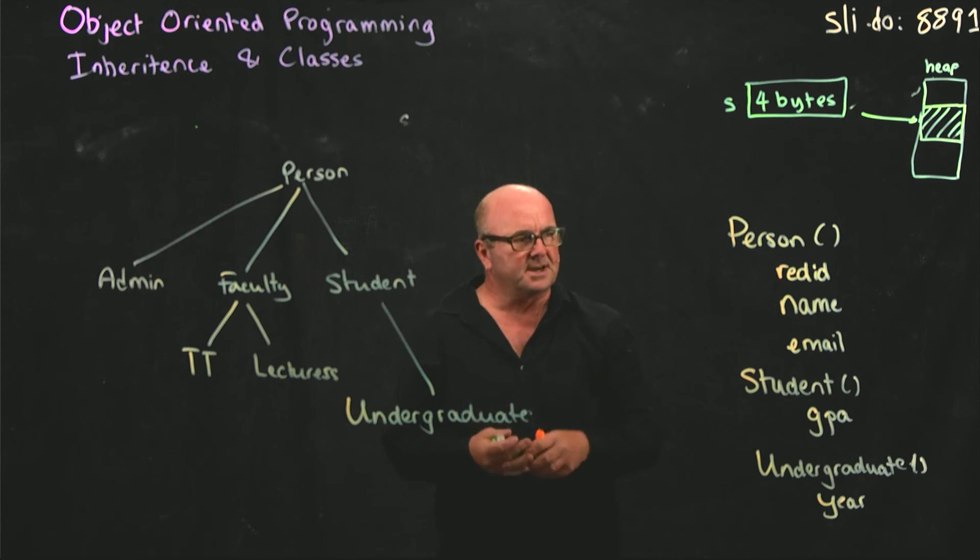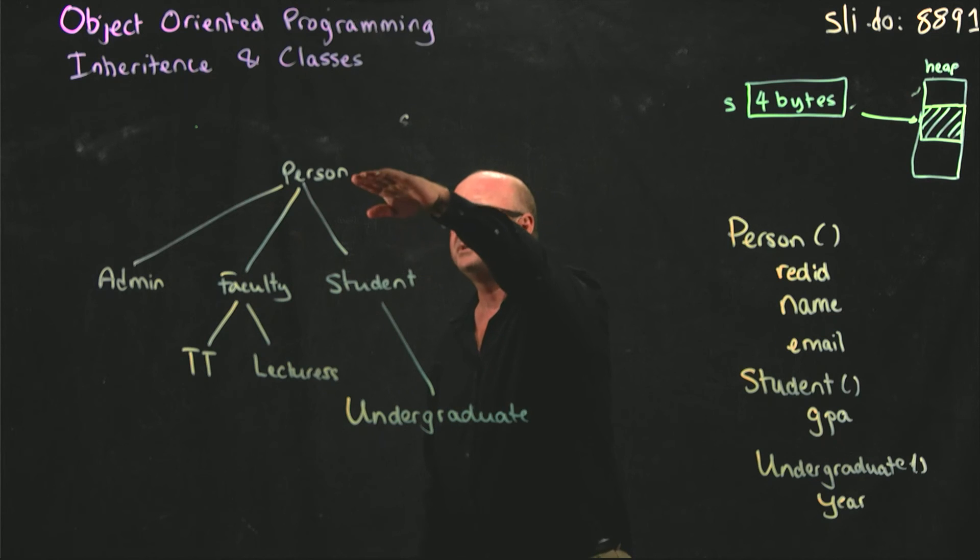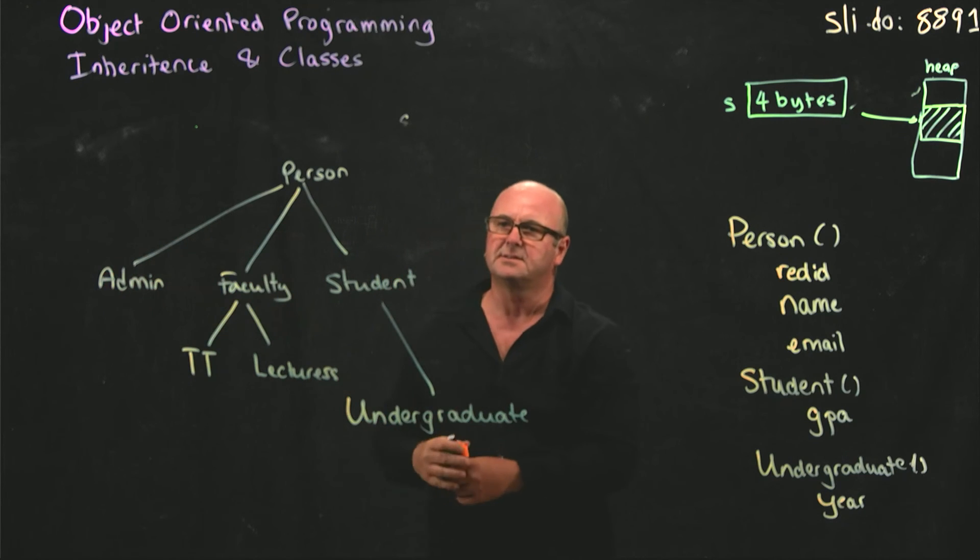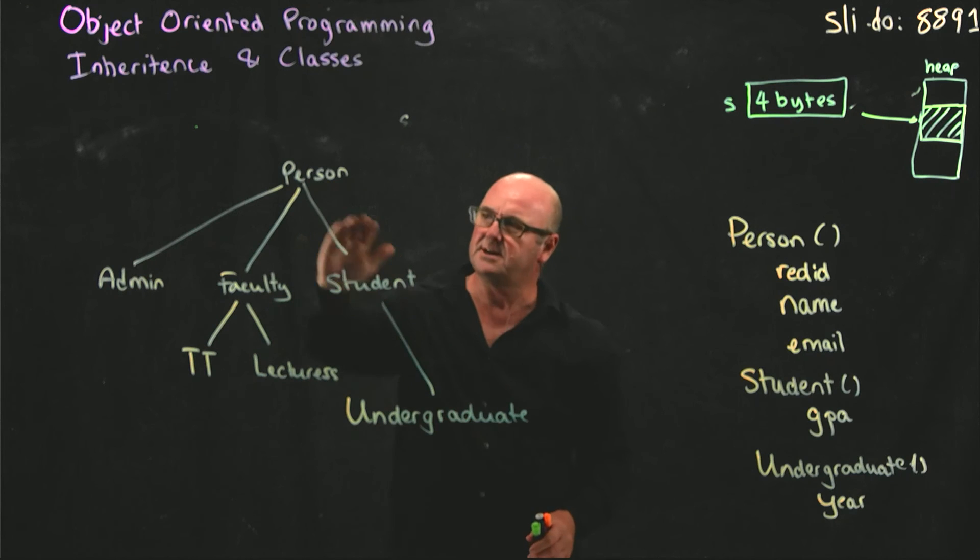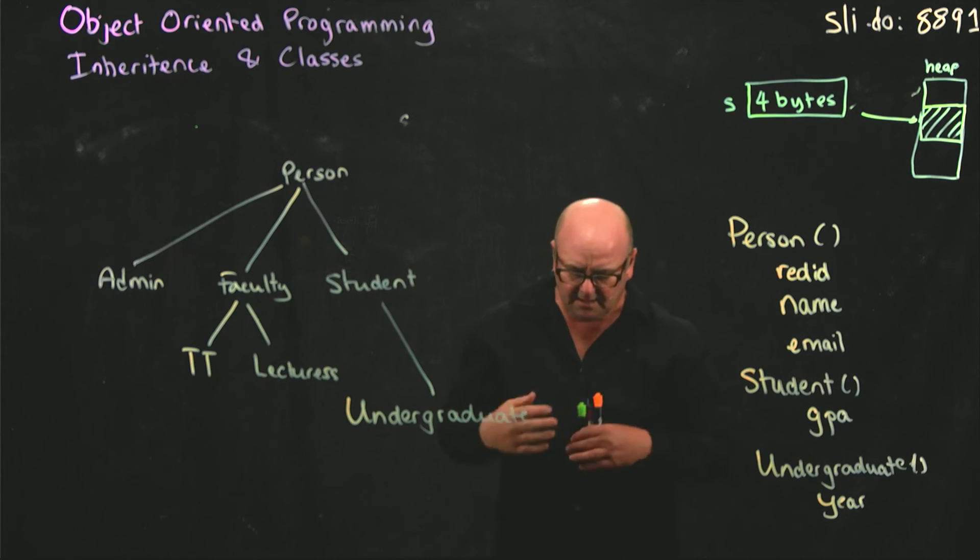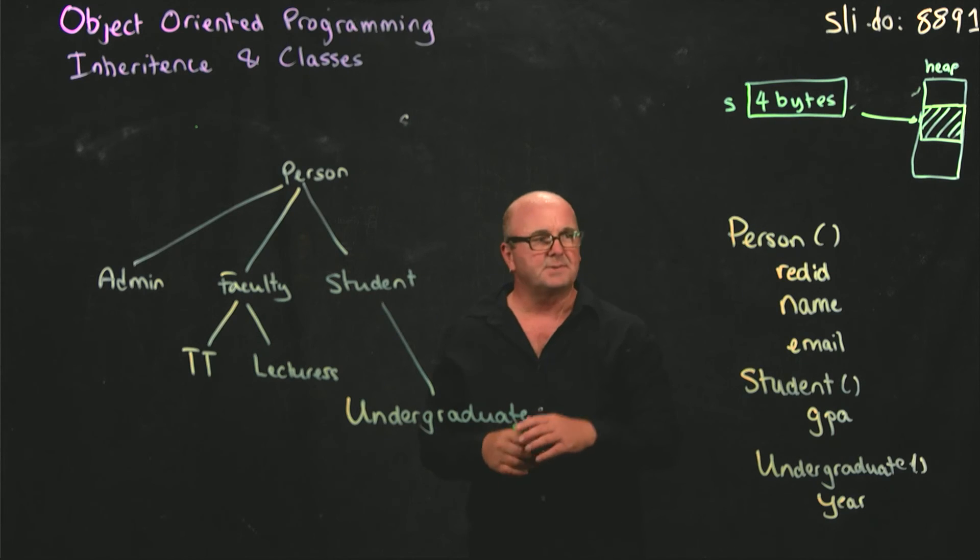So we have these different groups. And so undergraduate extends from student, and student extends from person. But notice that undergraduate doesn't know anything about faculty or administrators or anything else. So you can only go up the tree in that sense. You can only go up the tree.